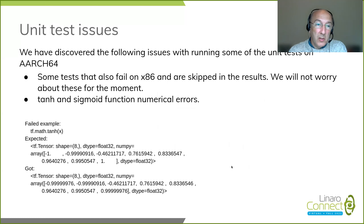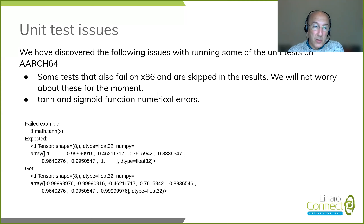There are some issues with the unit tests, particularly when running on AArch64. Some tests fail on AArch64, but these also fail on x86 and are skipped in the results, so we do not need to worry about those for the moment. However, we are seeing numerical errors in tanh and sigmoid functions. An example throws an error when minus 1 is not equal to minus 0.99999976, and plus 1 is not equal to 0.99999976. We are currently investigating these issues to understand the root cause and to see what we can do to resolve them.